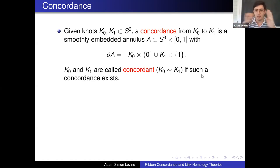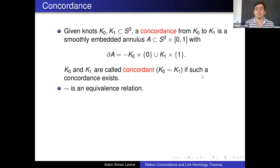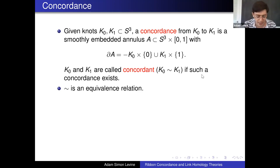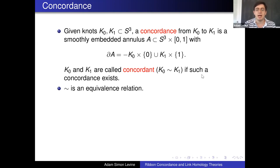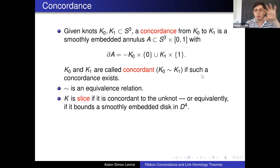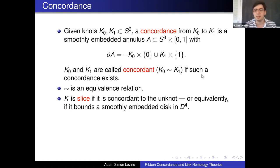Of course any knot is concordant to itself — you just take the product. The existence of a concordance is an equivalence relation: if one knot is concordant to another and the second is concordant to a third, you can just glue those cylinders together. For the reverse, if K1 is concordant to K2, reversing the time direction gives the other concordance. The classification of knots up to concordance is a very big question. A knot is slice if it's concordant to the unknot, which is equivalent to bounding a smoothly embedded disk in the four-ball.